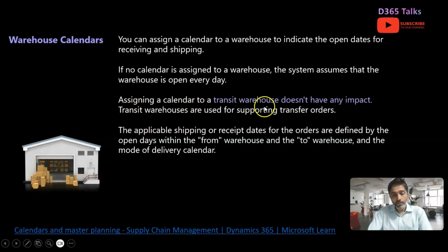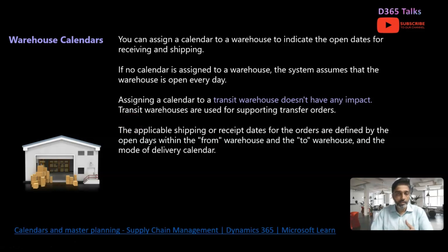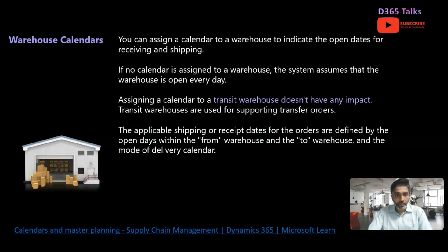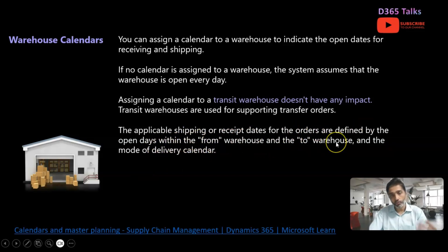Assigning a calendar to a transit warehouse does not have any impact. We discussed the concept of transit warehouses in the advanced warehouse management series — I'll share that playlist link in the description. If you are using a transit warehouse for transfer orders, the warehouse calendar is not applicable for that transit warehouse. The applicable shipping and receipt dates are defined by the open days within the from-warehouse and the to-warehouse, so you need to define the warehouse calendar for both.